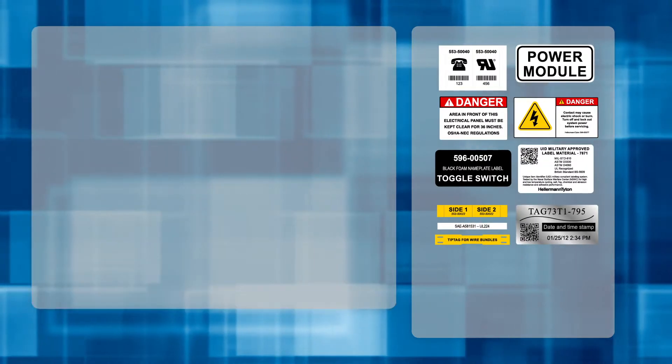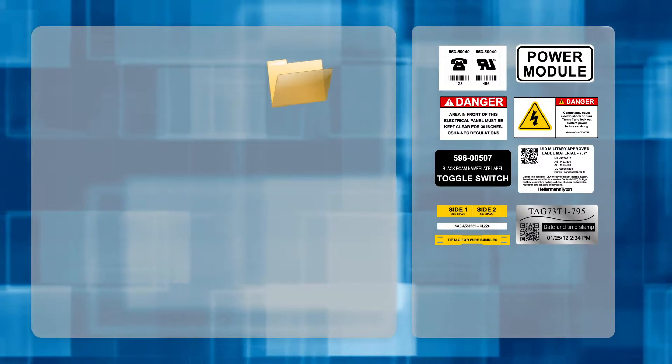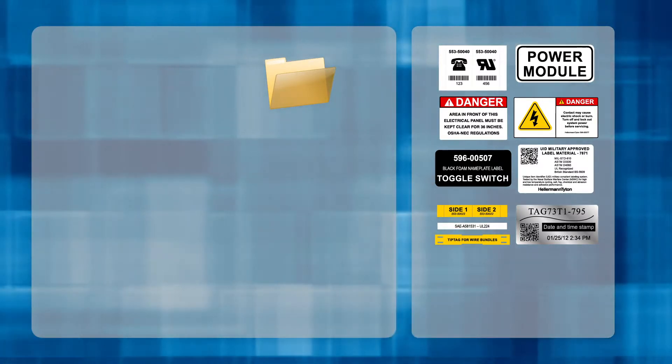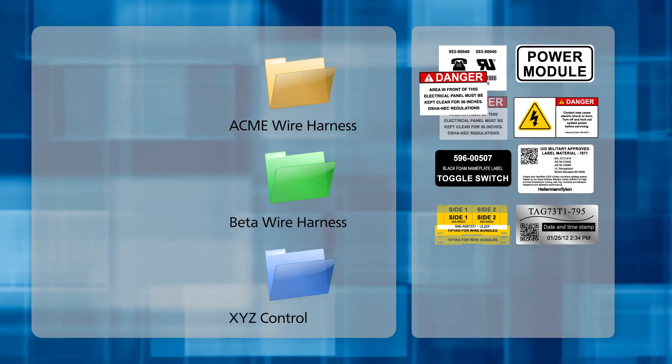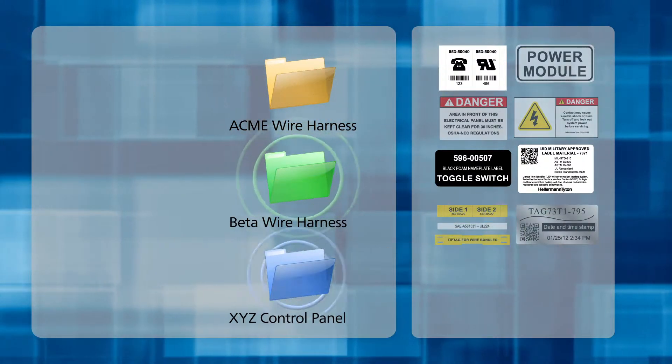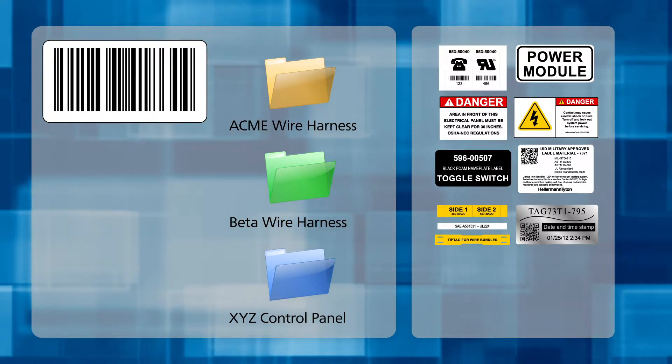Let's take it to the next level. Need multiple labels for repeat customer jobs, such as a harness or control panel? Of course, create a job folder. Give it a descriptive name, like Acme Wire Harness. Then simply drag and drop the appropriate labels to the folder. Create a barcode for the job, and you're all set.